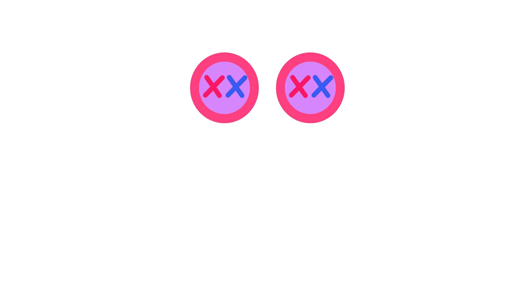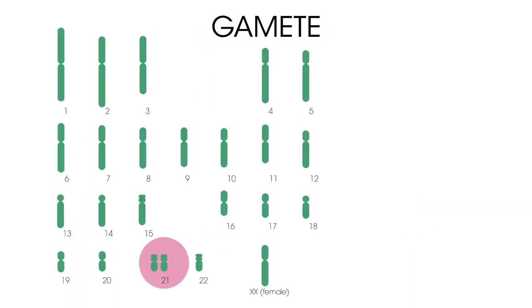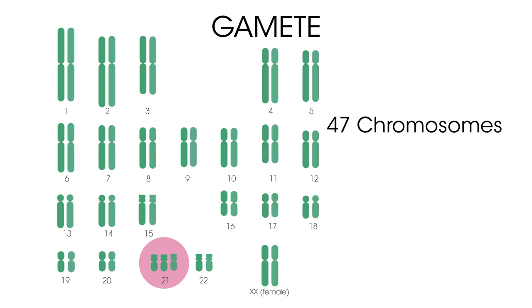However, sometimes the chromosomes are not separated or divided up how they should be, and this is called non-disjunction. One example of non-disjunction in humans is the condition known as Down's syndrome. In this case, the 21st chromosome fails to segregate and the gamete produced possesses 24 chromosomes — 23 plus an extra copy of chromosome 21. The fusion of this gamete with a normal one results in the offspring having 47 chromosomes.